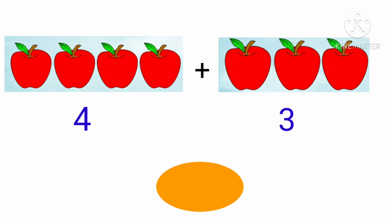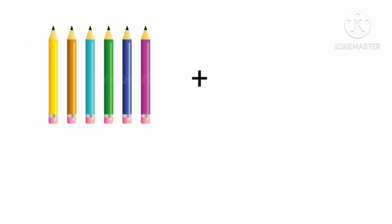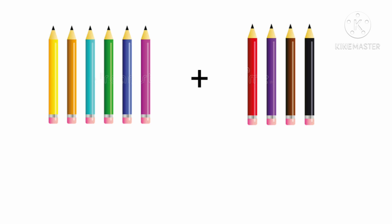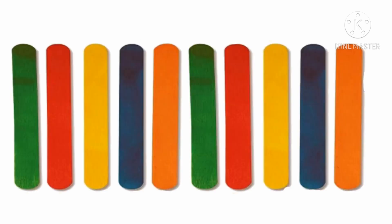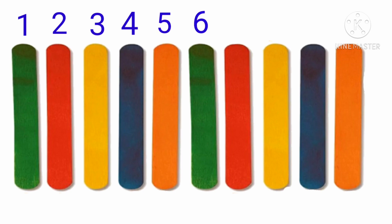4 apples in the first box and 3 apples in the second box, so 4 plus 3 is 7. Altogether there are 7 apples. Now, 6 pencils plus 4 pencils is equal to how much? Think and say. Correct, 6 plus 4 is equal to 10. How many sticks are there on the screen? Let's count: 1, 2, 3, 4, 5, 6, 7, 8, 9, 10. Very good, so there are 10 sticks.